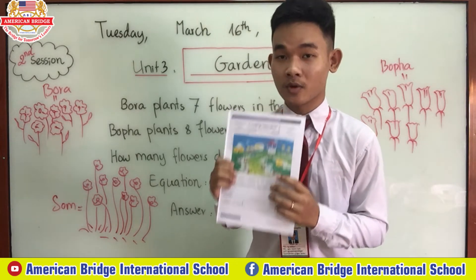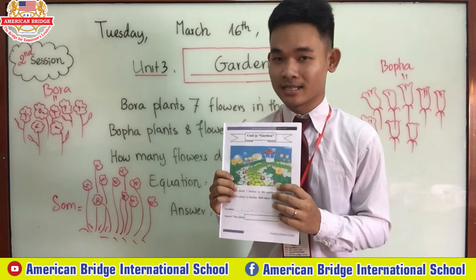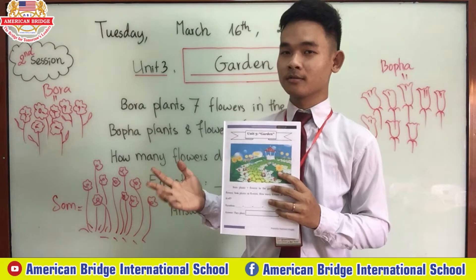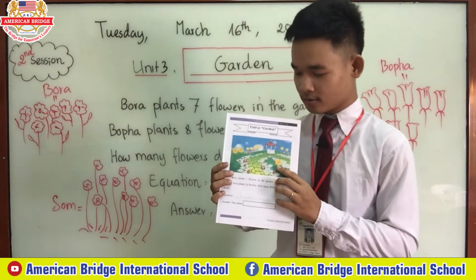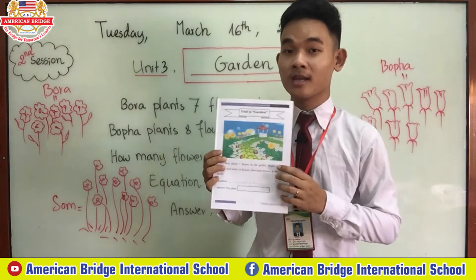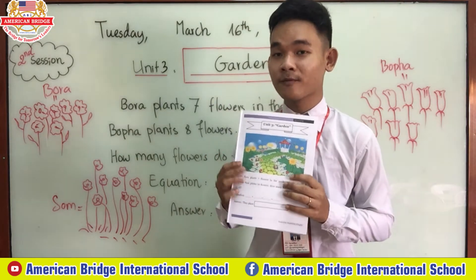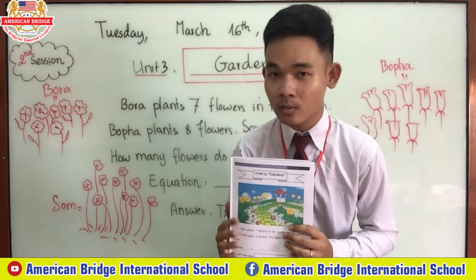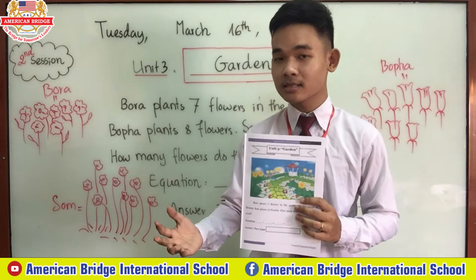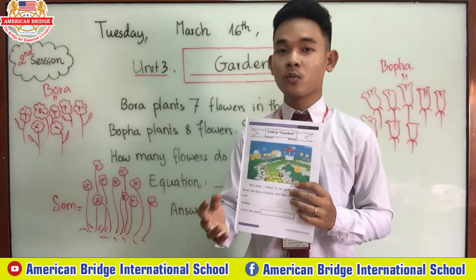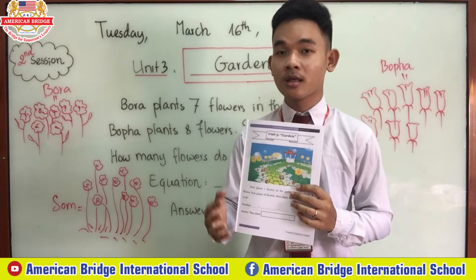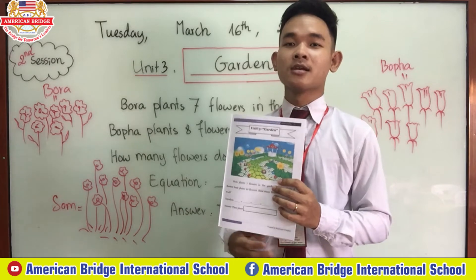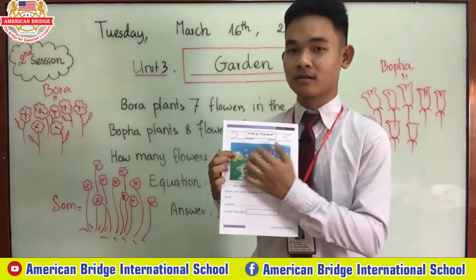What is the title of Unit 3? Garden. Do you know what garden is? Garden is a place where we plant or grow all kinds of flowers, or maybe vegetables. These we call garden.